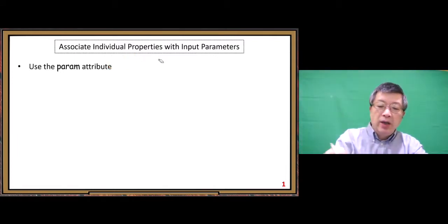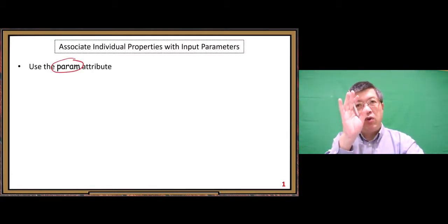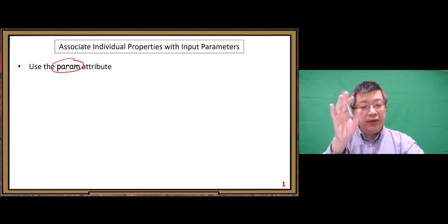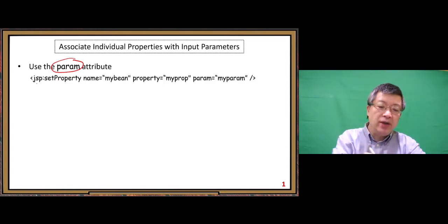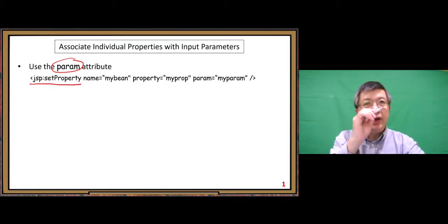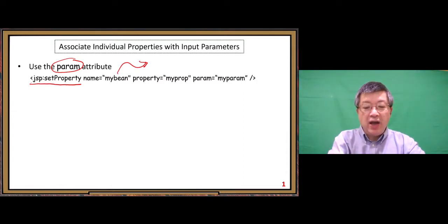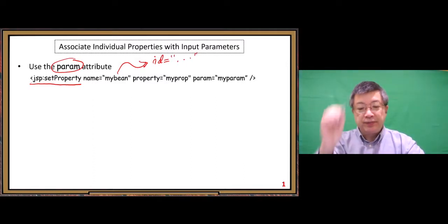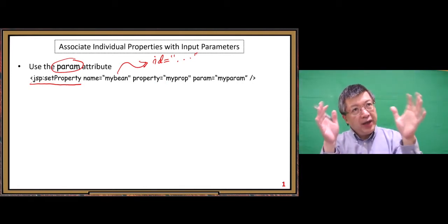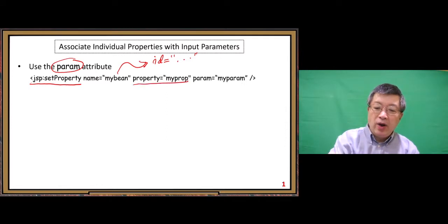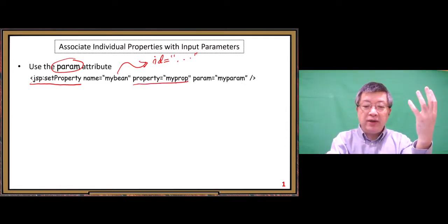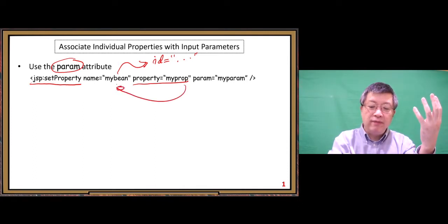To do that, we need to use the param attribute — an extra param attribute — in the setProperty tag. JSP calls it setProperty. The name attribute points to the bean reference, and the property attribute specifies which property we want to do the data copy from. One property from that bean, from my bean's JavaBeans.